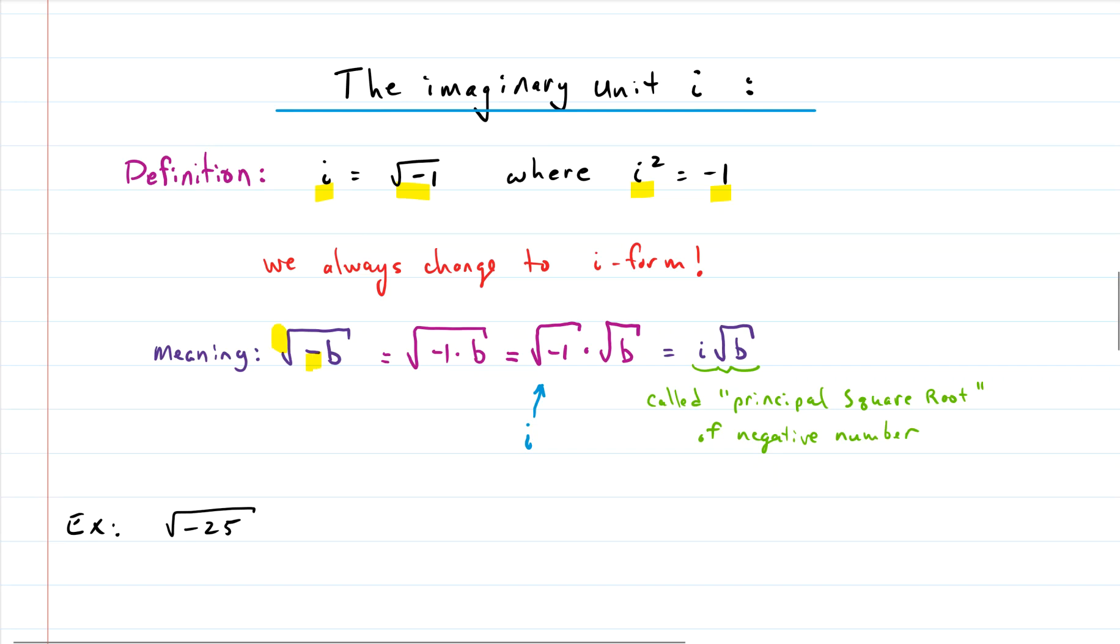Then we want to change to i form, which means the radical index is out here in front. If it's not there, it's assumed to be a two, which is an even number. So we have an even index radical that has a negative underneath. We'll pull that negative out as can be seen with these two intermediate steps, and we'll end up having the i out front. So we'll always want to change to i form.